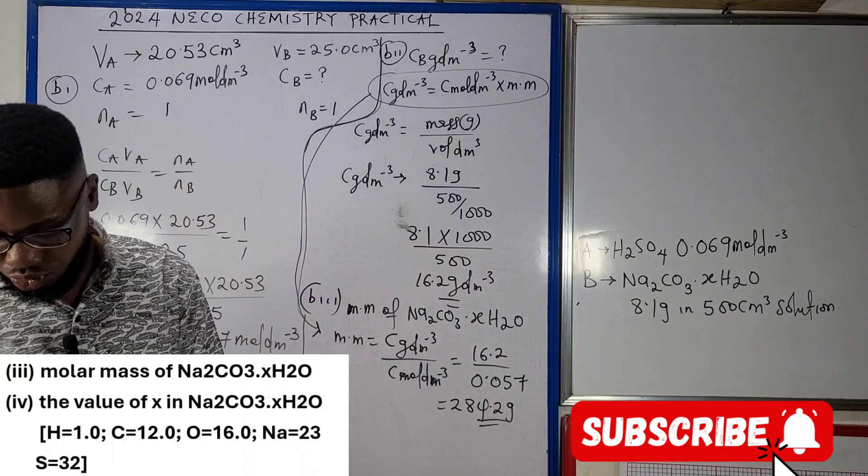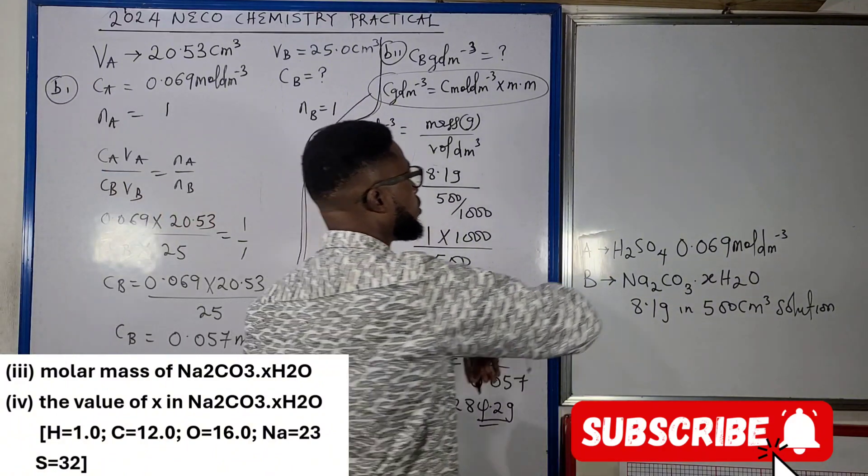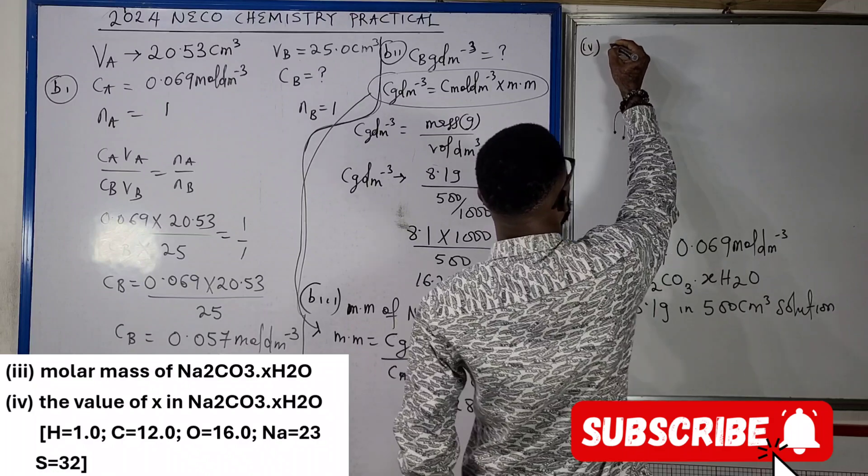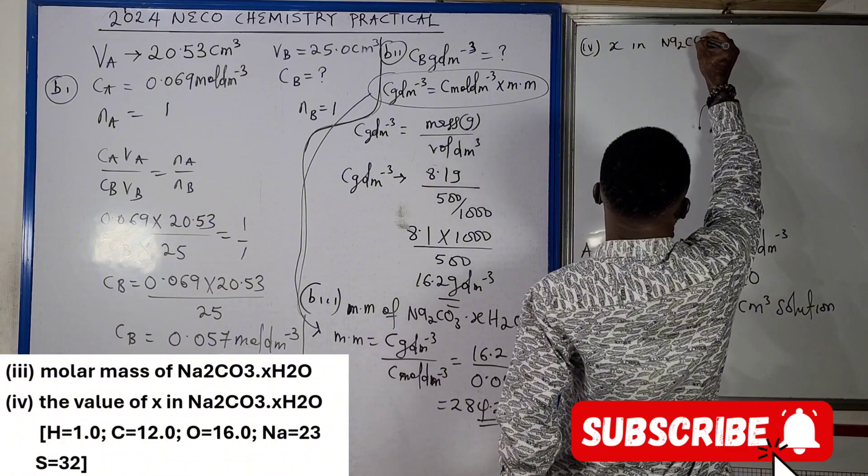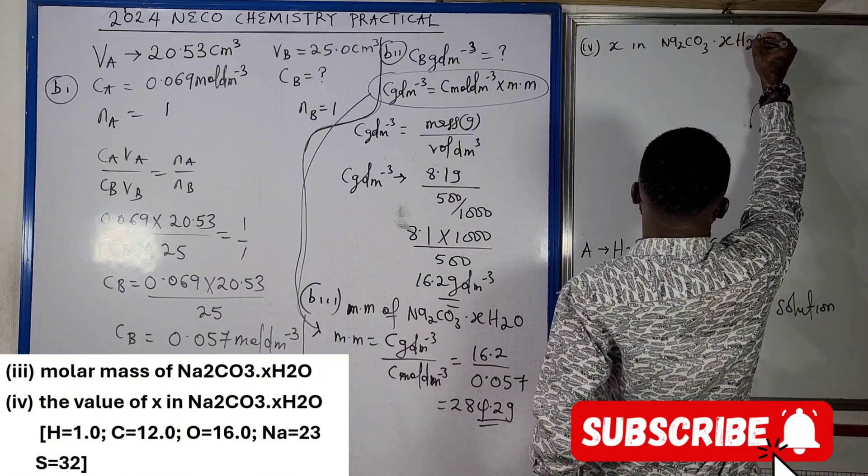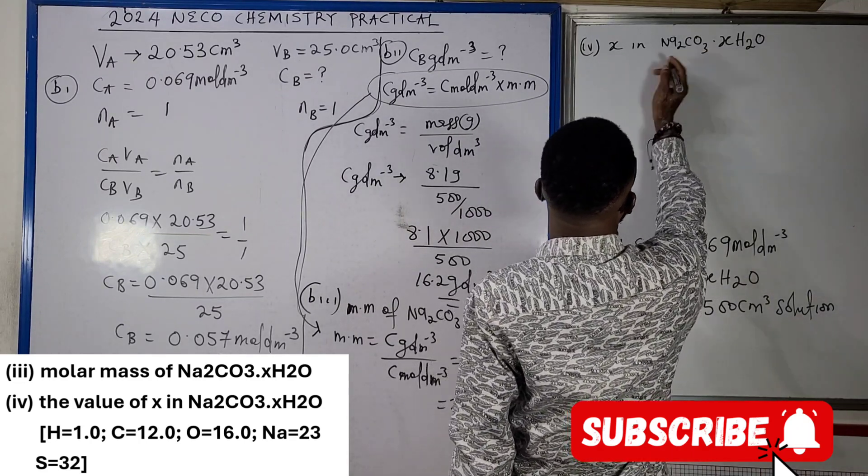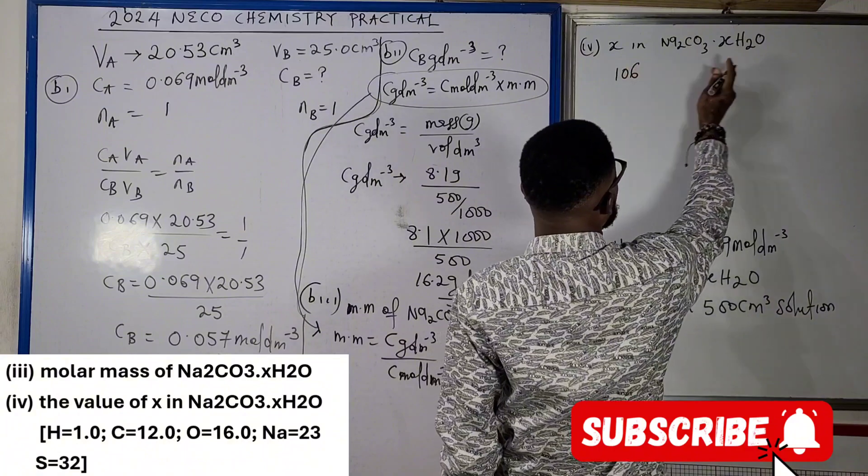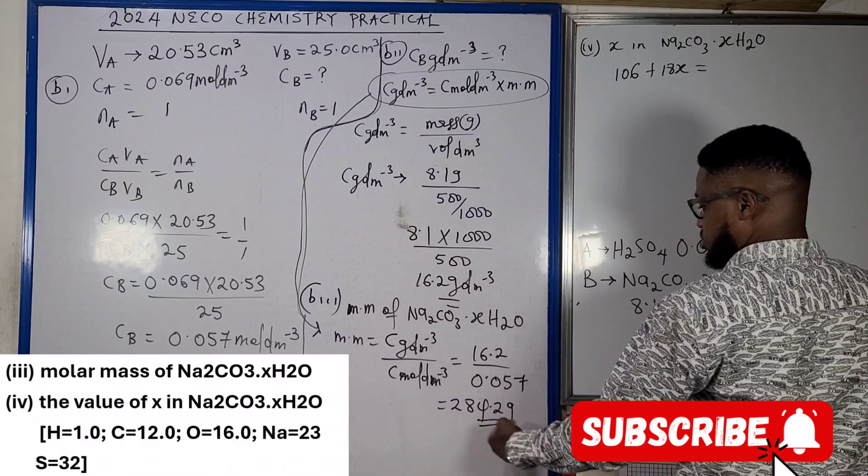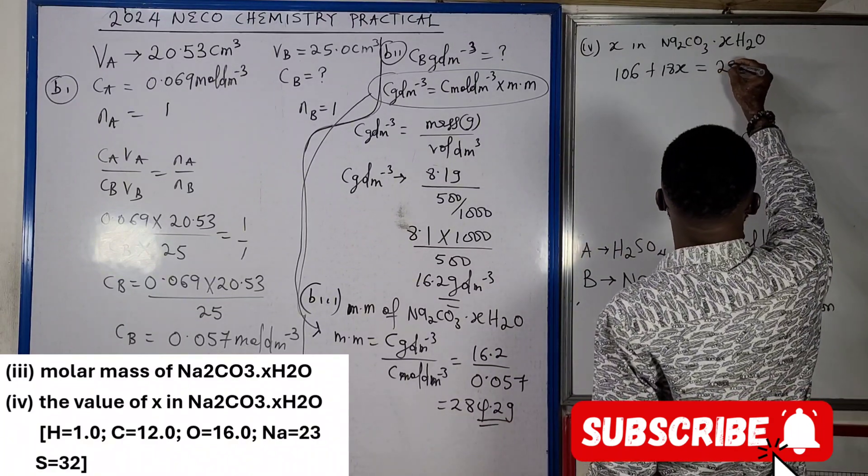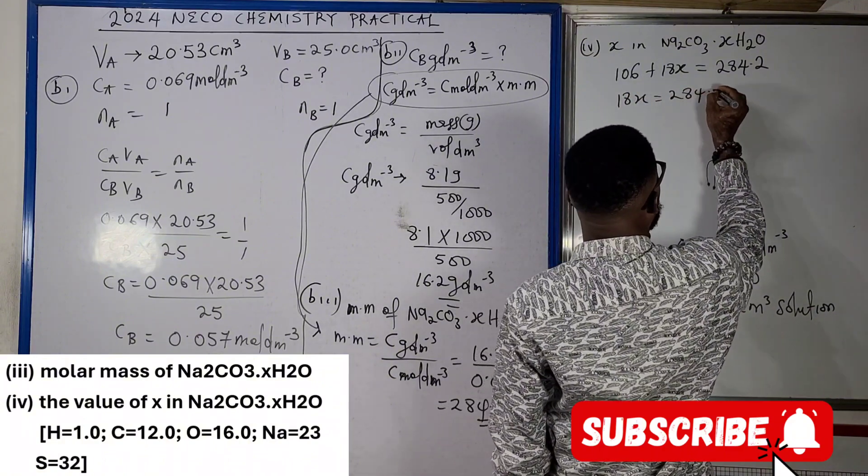We were told to look for the value of x in Na2CO3 dot xH2O. So what that means is that Na2CO3, that is 106, plus water is 18, plus 18x, all equals to the molar mass 284.2. This will mean 18x equals to 284.2 minus 106, so that will give us 178.2.